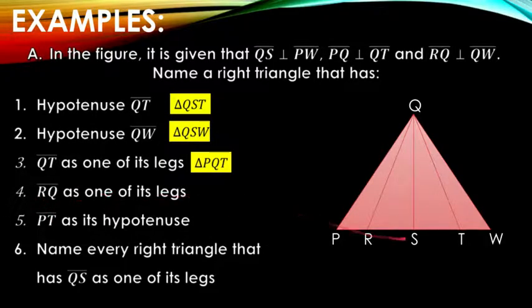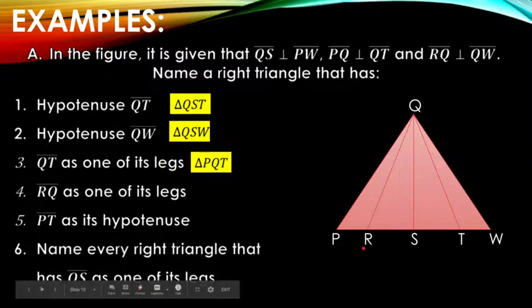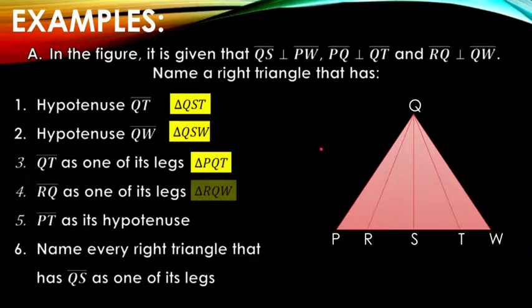Next, RQ as one of its legs. Side RQ is here. It's just a leg, not the hypotenuse. We need to find the longest leg. Could it be triangle QWR? Let's see. QWR. Yes, correct. We have triangle RWQ.